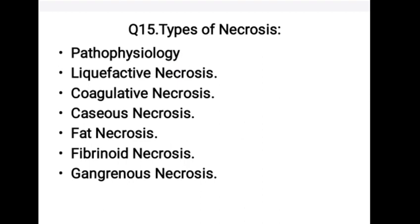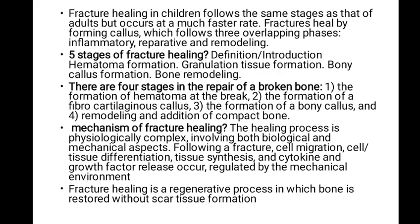Different patterns of necrosis include: coagulative necrosis, where the dead cell remains firm and looks normal for many days after death; liquefactive necrosis; fat necrosis; caseous necrosis; fibrinoid necrosis; gangrenous necrosis; and osteonecrosis. These are the main types of necrosis.